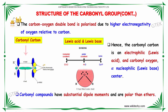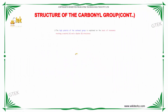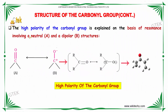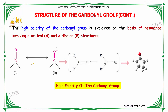Carbonyl compounds have substantial dipole moments and are more polar than ethers. The high polarity of the carbonyl group is explained on the basis of resonance involving a neutral structure A and a dipolar structure B. This is the neutral A structure and this is the dipolar B structure, showing the high polarity of the carbonyl group.